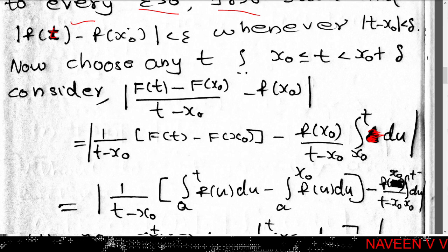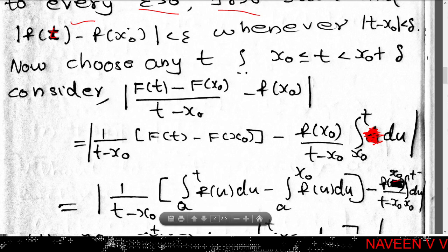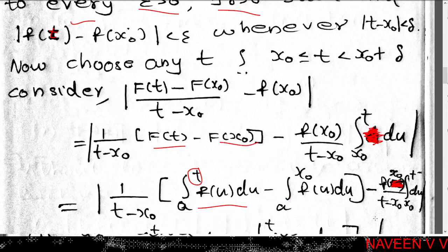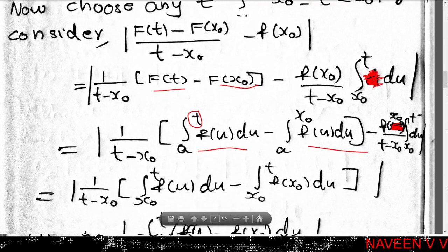Note that ∫_{x₀}^{t} du = t - x₀, so f(x₀) = f(x₀)/(t - x₀) · ∫_{x₀}^{t} du. Now consider |[F(t) - F(x₀)]/(t - x₀) - f(x₀)|, which equals |1/(t - x₀) · [F(t) - F(x₀)] - f(x₀)/(t-x₀) · ∫_{x₀}^{t} du|. By definition, F(t) = ∫_a^t f(u) du and F(x₀) = ∫_a^{x₀} f(u) du.